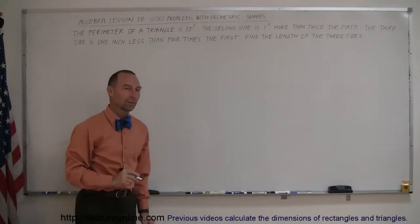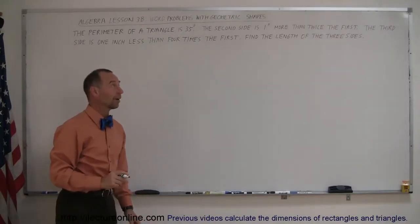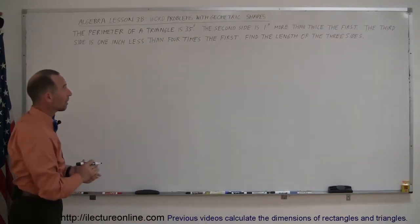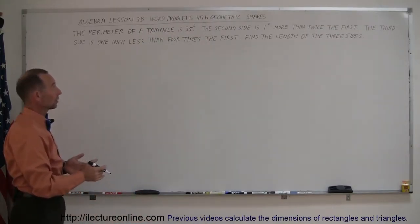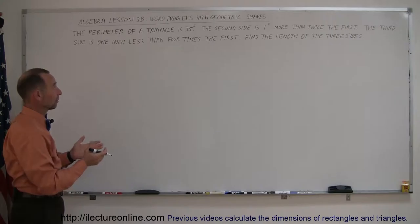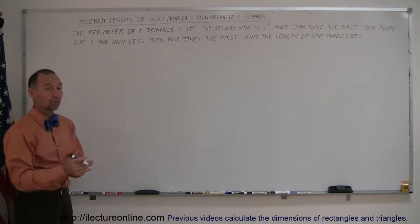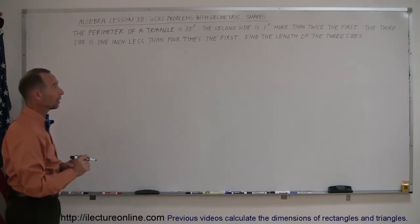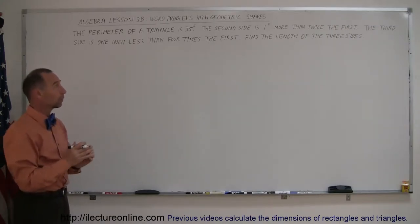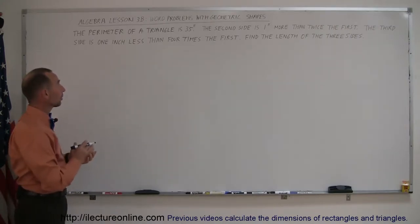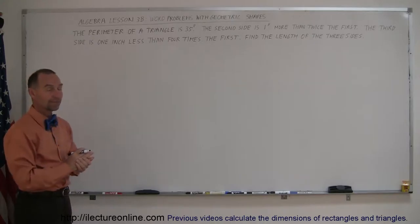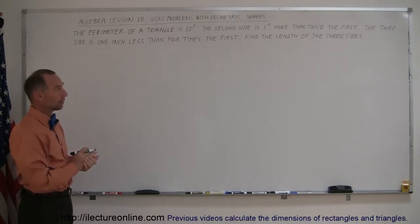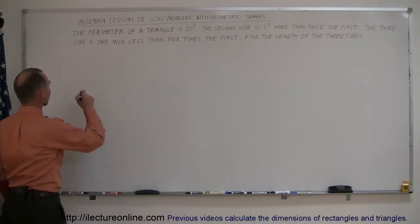Here's a third example of how you find the dimensions of a triangle. We're solving word problems with geometrical shapes dealing with just one variable. This is part of lesson 3b, and we're given a triangle.